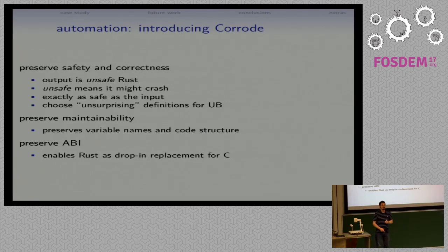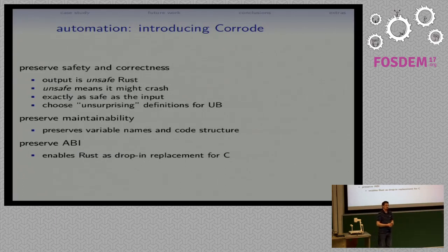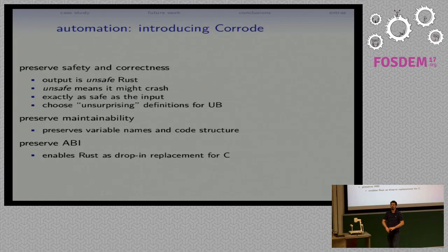Another principle of Corrode is preserving maintainability to the extent possible. So if you started with code that you could actually maintain, the output of Corrode should be Rust that you can actually maintain. If you started with utter crap, I can't help you. A big part of how Corrode works is it aims to preserve variable names and preserve the structure of the code as much as possible — as much as possible about how the program was originally written.